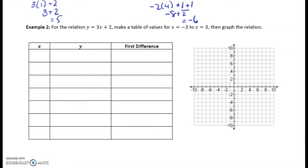For the relation y equals 3x plus 2, make a table of values for x equals negative 3 to x equals 3, then graph the relation. So we're going to take these x values and put them in the x column: negative 3, negative 2, negative 1, 0, 1, 2, 3.